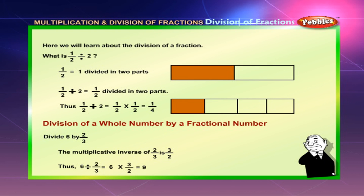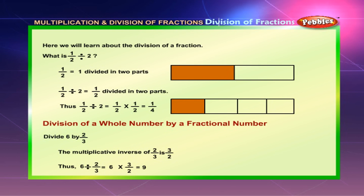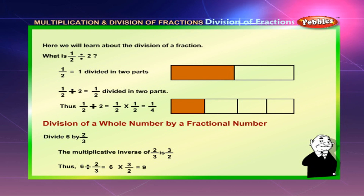Division of a whole number by a fractional number: Divide 6 by 2 by 3. The multiplicative inverse of 2 by 3 is 3 by 2. Thus, 6 divided by 2 by 3 is equal to 6 into 3 by 2, which is equal to 9.